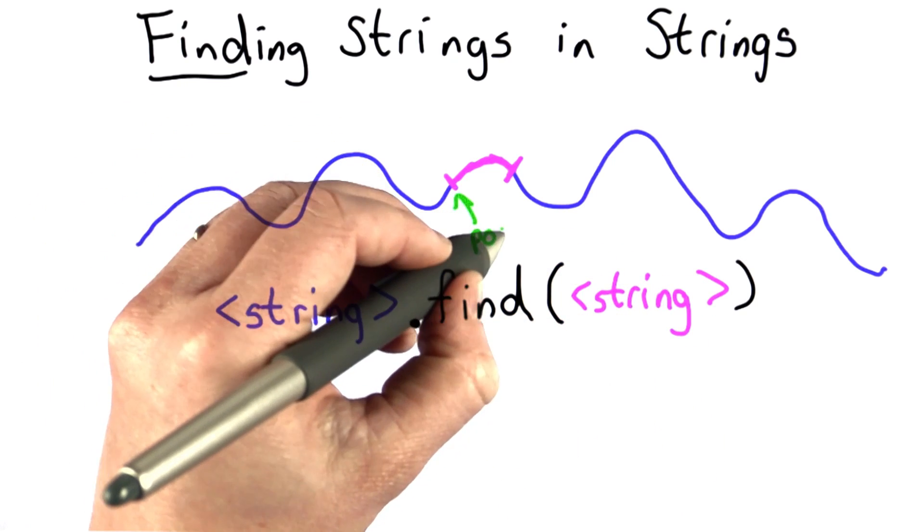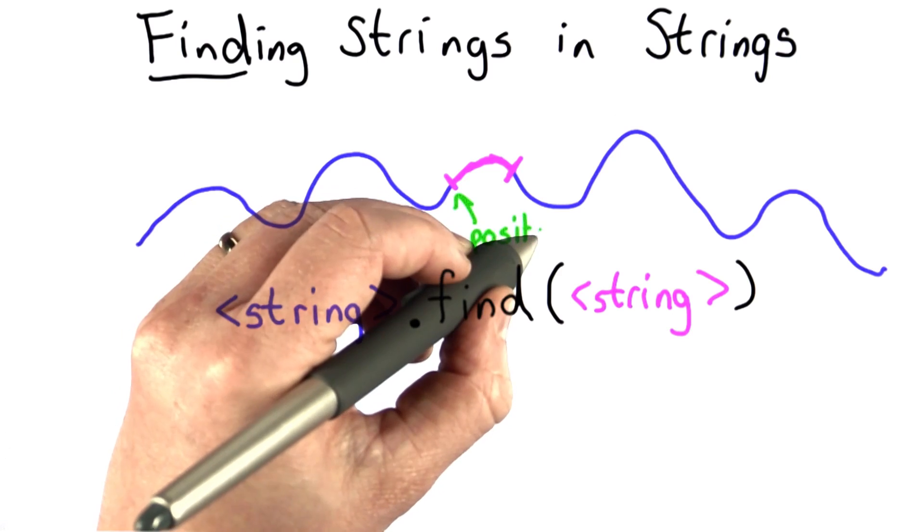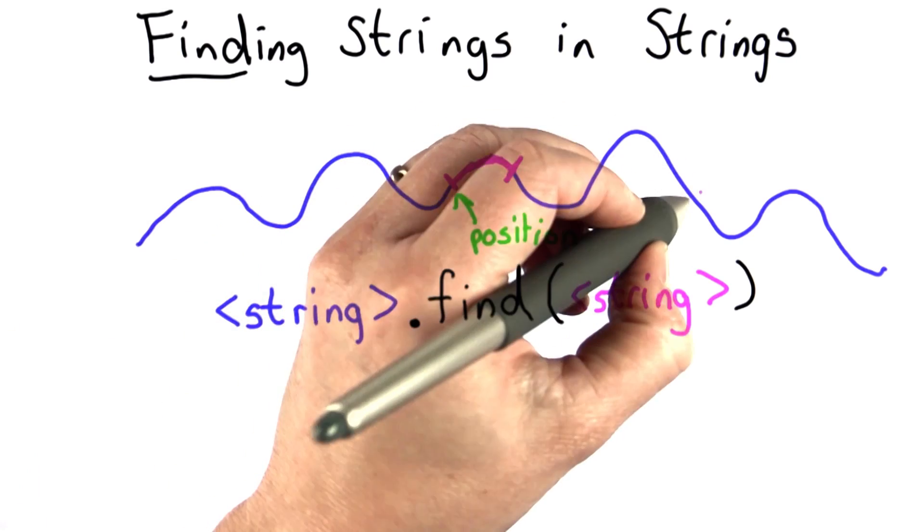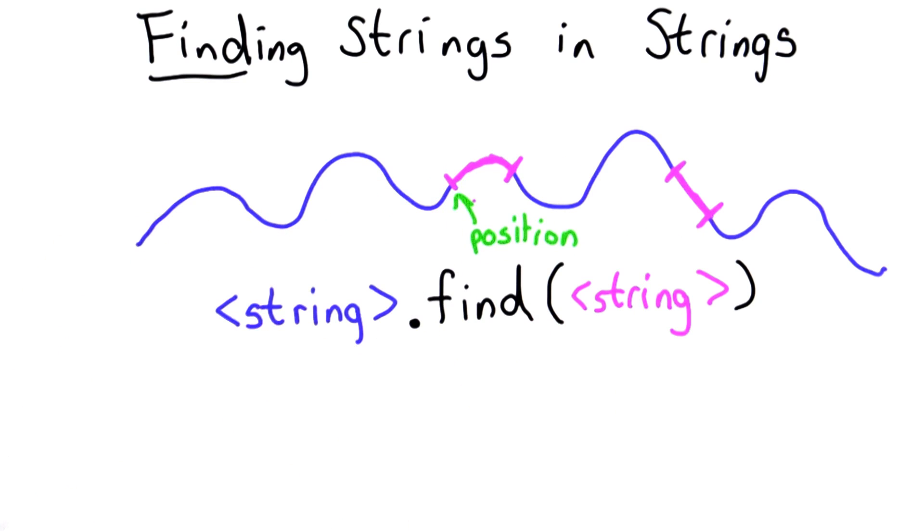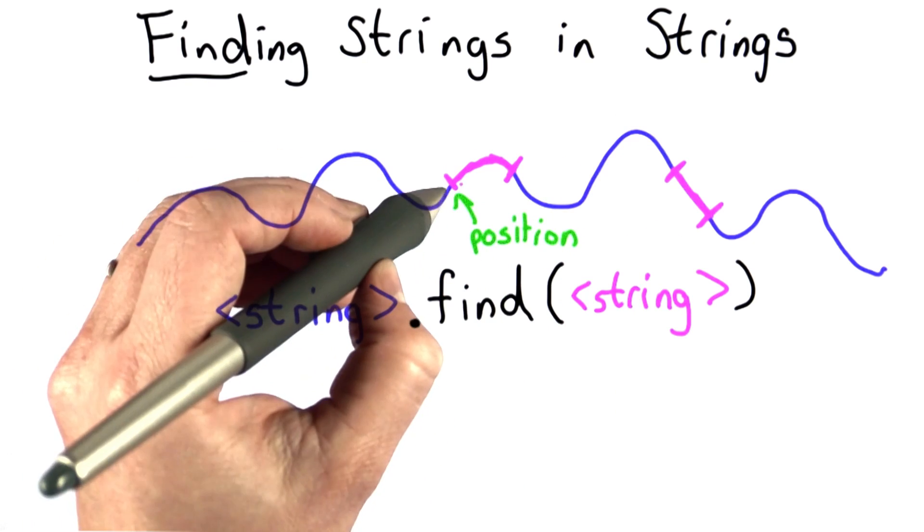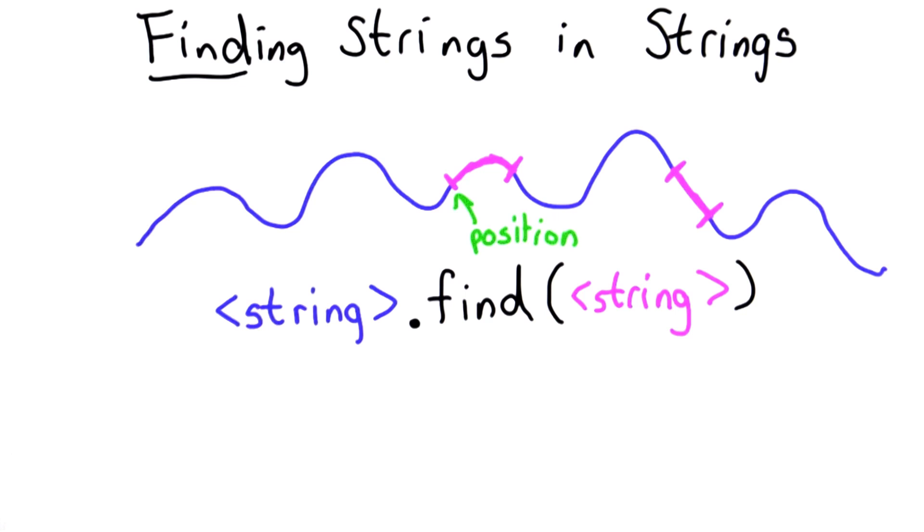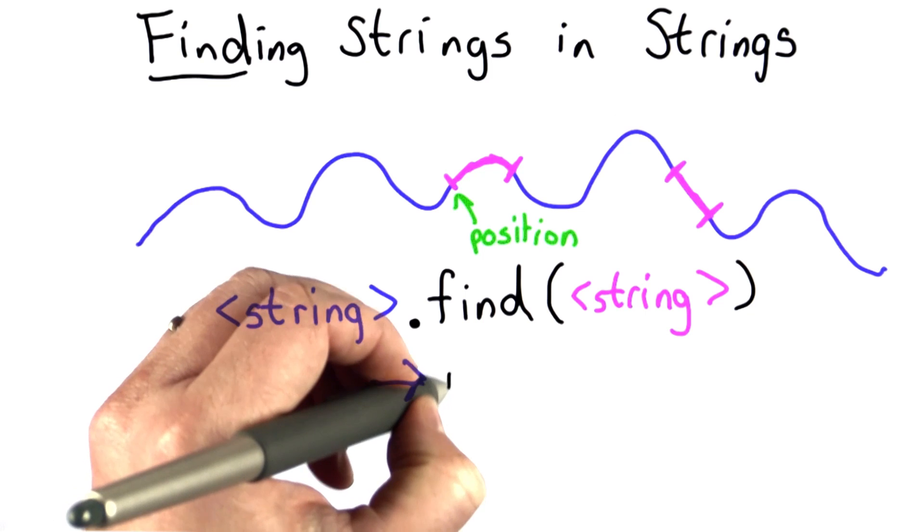And the output of find is the position in the string where that substring is found. The first occurrence of the string. So if that string happens to occur more places than one in the input string, the result of find is always going to give us the position. That's the number where the first occurrence of the substring occurs.